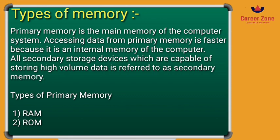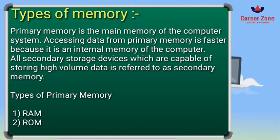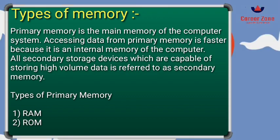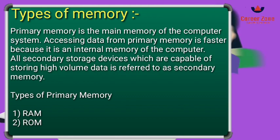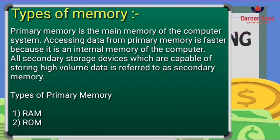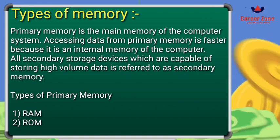Whenever you purchase a CPU, you get the primary memory already attached within it. If you need any additional storage, you can increase the storage capacity by adding a secondary memory to your computer. Accessing data from primary memory is really faster compared to external memory, because it is internally attached inside the CPU. Primary memory is further divided into two parts: RAM and ROM.